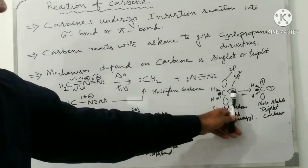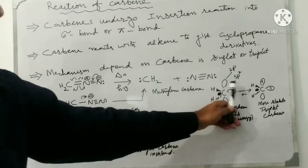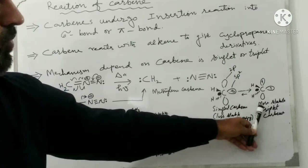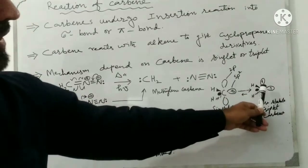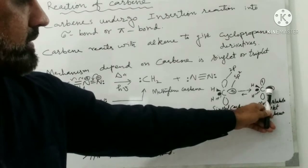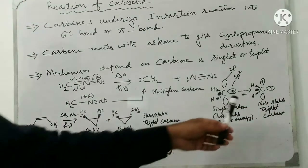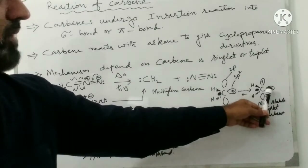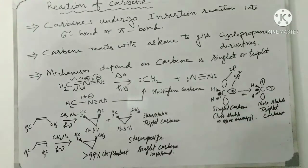When one electron leaves the sp2 orbital and occupies the empty 2p orbital, the singlet converts to the triplet. The triplet is more stable because now each electron is in a separate orbital, so according to Coulomb's law, the electrostatic repulsion between the electrons is minimum. Triplet carbene is more stable, which means it is less reactive.